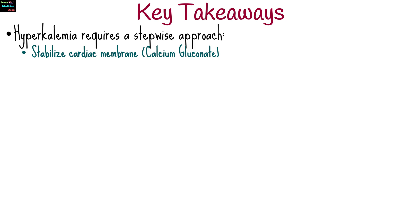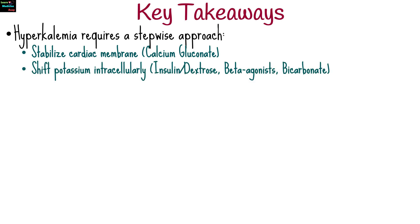Stabilize the cardiac membrane using calcium gluconate. Shift potassium intracellularly with insulin, dextrose, beta-agonists, and bicarbonate.